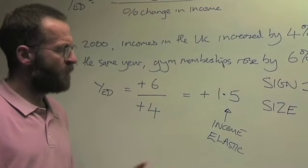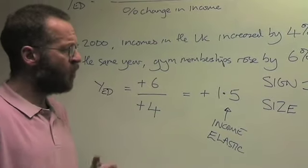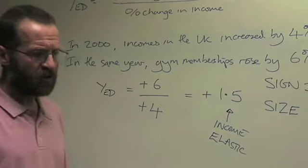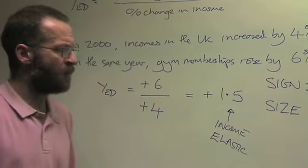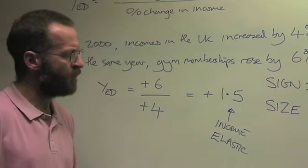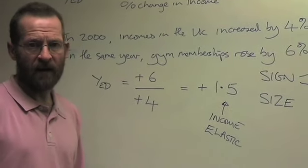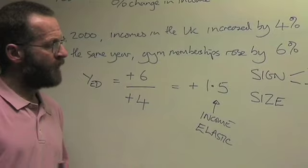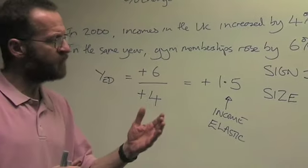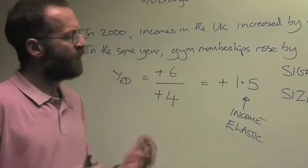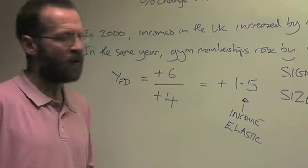Likewise, if you're a supermarket and the economy is doing well, you will stock more of the upmarket type products because people will buy more of those. In a recession, you'll bring out more value lines, more economy lines, because as people's incomes go down, they will buy more of these low-priced products.